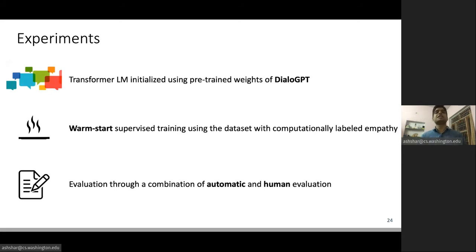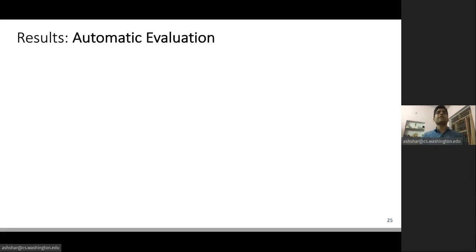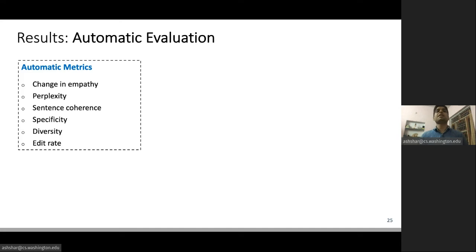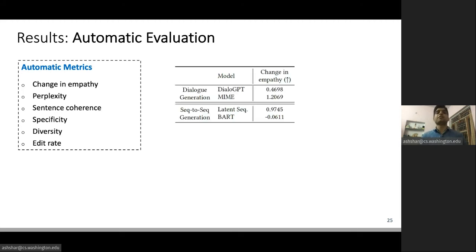We performed automatic evaluation over six automatic metrics: change in empathy, perplexity, sentence coherency, specificity, diversity, and edit rate. We compared our model against various dialogue generation and sequence-to-sequence generation baselines. This table shows our results on change in empathy metric. We find that PARTNER is able to increase empathy on average by over 1.6 points on the six-point scale. Now, posts in our dataset have an average empathy score of around one.